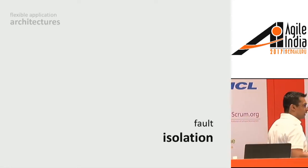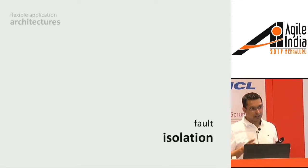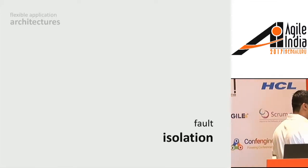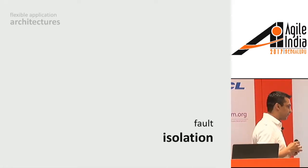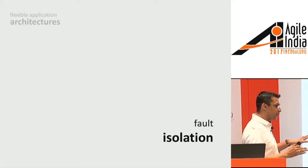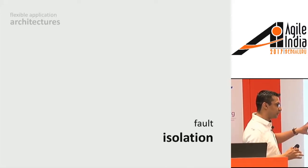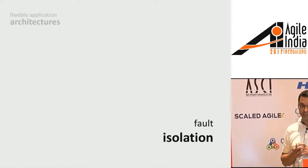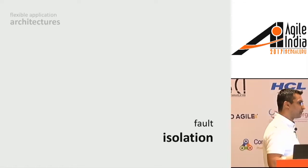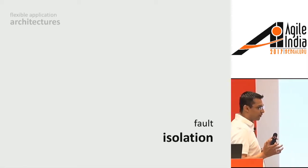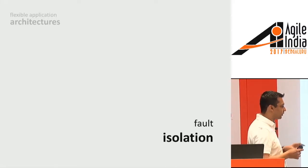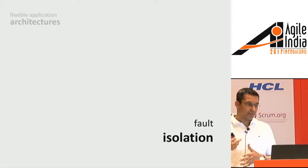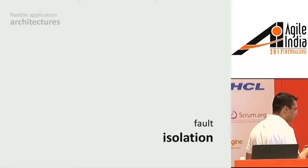Fault isolation is another very key aspect. When we talk about cloud native applications or microservices architecture, we talk about various smaller services each providing a specific business capability. In a monolith, if there was an exception the whole application used to go down. If the recommendation engine is not working, should it stop you from buying something from my shopping cart? Certainly not. What we do is a bulkhead pattern — isolate the faulty part so that only the given microservice is isolated and tackled differently. There are various patterns to handle fault isolation.